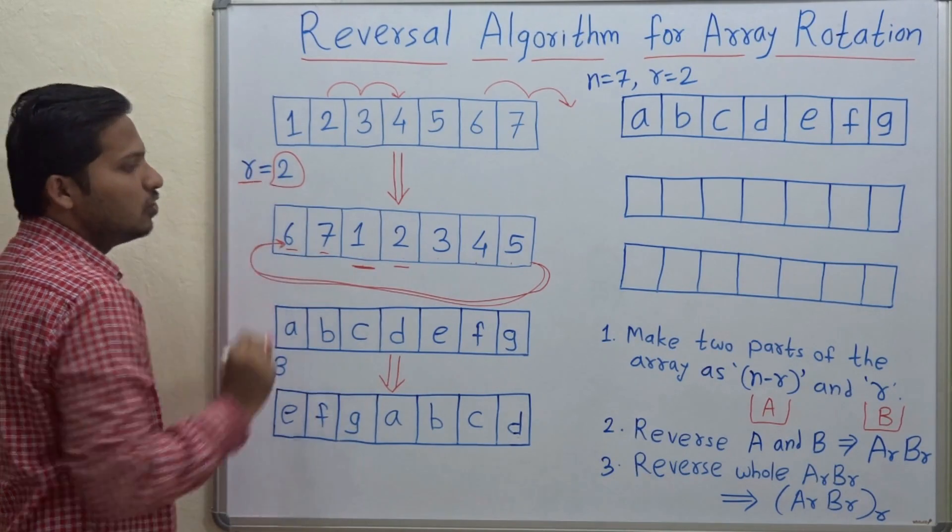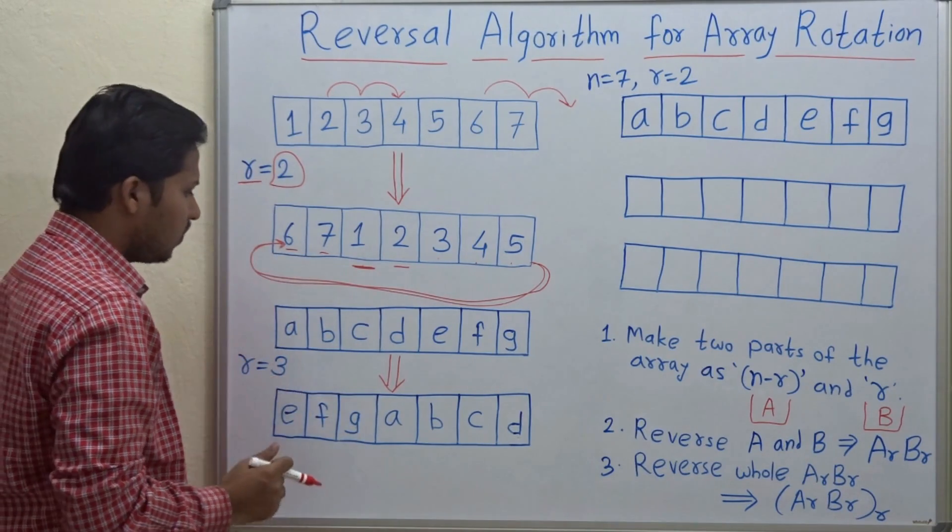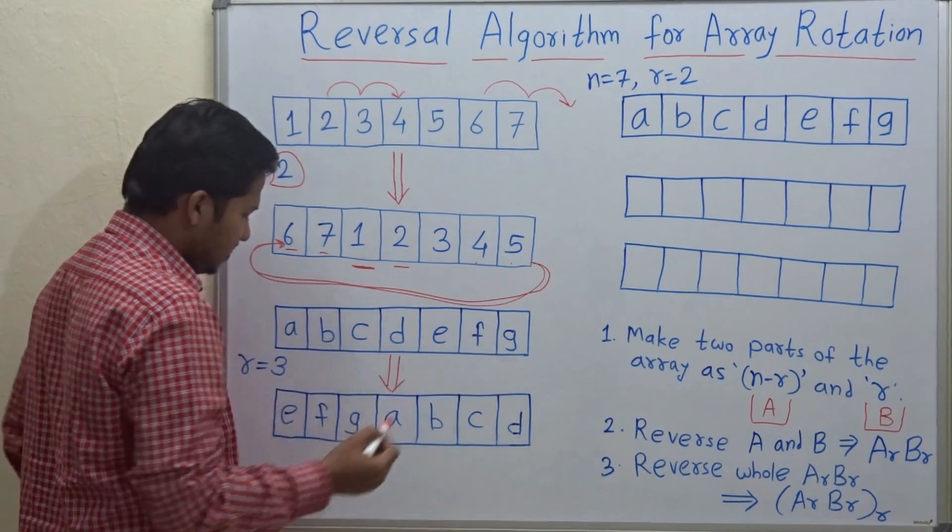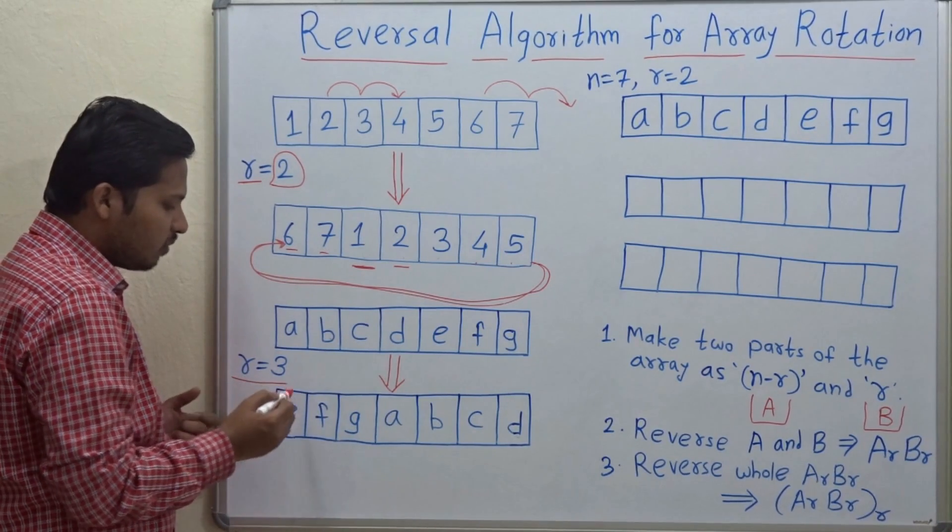Now let's take another example. A, B, C, D, E, F, G and here you have to rotate by three places.